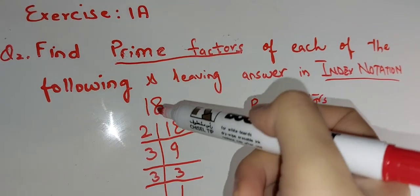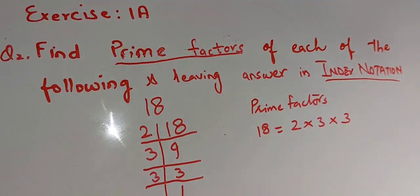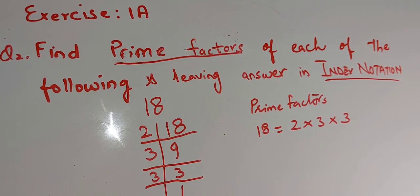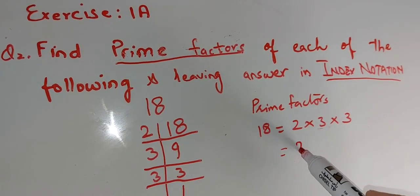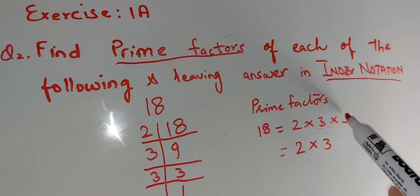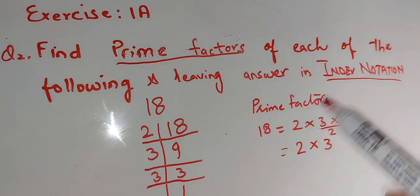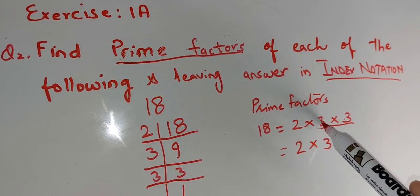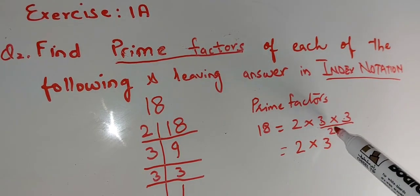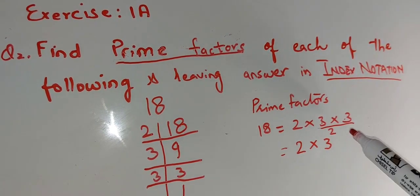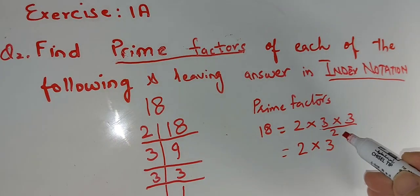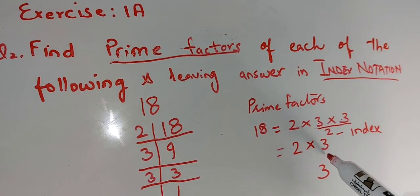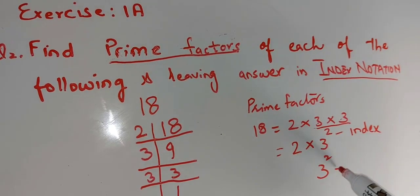We start from 2, and until the number is divisible by 2 we divide by 2, then move on to 3. Now the second part of the question is leaving the answer in index notation. We write 2 multiply by 3, and since there are two 3's, we write 3 squared, or 3 to the power 2. This 2 is called the index, and writing the expression like 3 to the power 2 is called index notation.